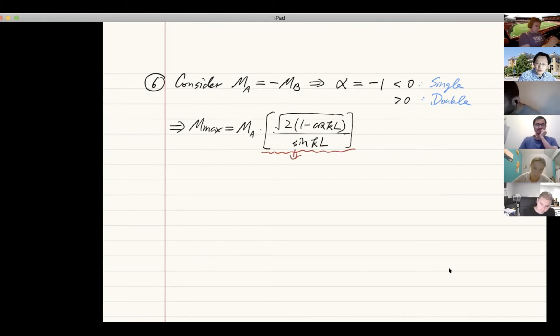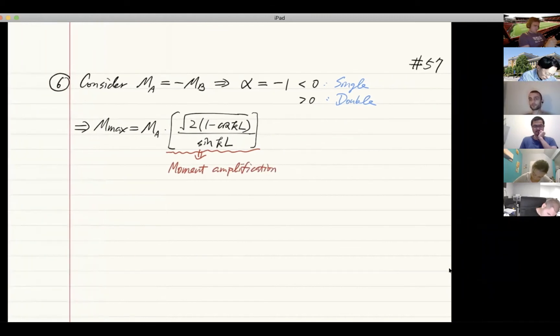This is the expression we call moment amplification, because without the axial force, the maximum moment is going to be one of the end moments—in this case, just MA. Now you have axial force. The second part in this expression, which is everything in this square bracket, is what we call moment amplification due to axial force P.